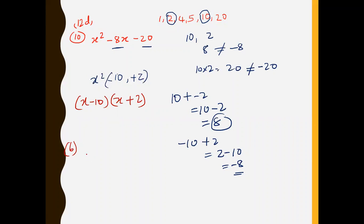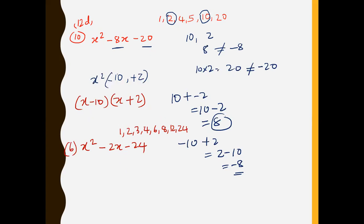Now let's try number 6. Question number 6 in the same exercise 12D says factorize x squared minus 2x minus 24. The first thing you do is write out all the factors of 24. The factors of 24 are numbers that can divide 24 without any remainder. You need to know your multiplication tables to find these easily.